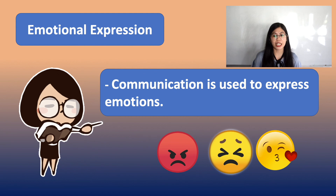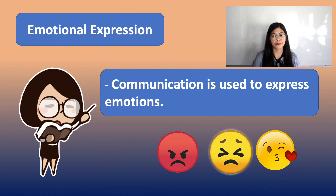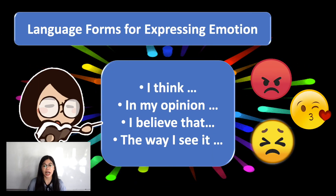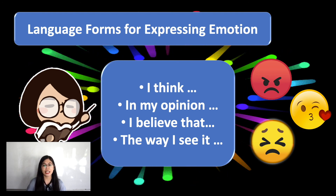Another function of communication is emotional expression. Communication is used to express emotions — we communicate to express what and how we feel, like love, fear, anger, and joy. Language forms for expressing emotions include 'I think' — for example, 'I think I am about to cry for the bad thing that happened to me today.' We also have 'In my opinion' — for example, 'In my opinion, you are someone who gives hope and positivity.' Other phrases include 'I believe that' and 'The way I see it.'